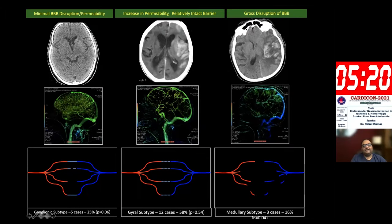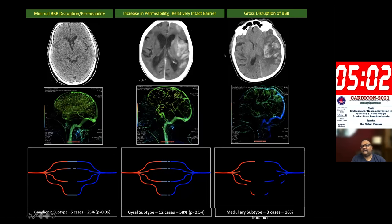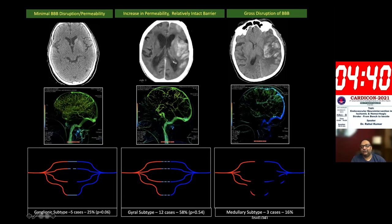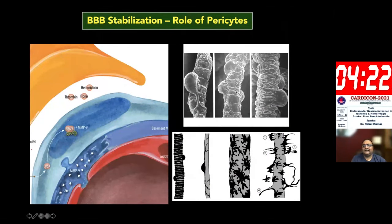We now have the capability to do a CT scan immediately after thrombectomy on the table itself. The problem is not just opening the vessel — reperfusion sets into motion a cascade of events that can end in hemorrhage. We find various patterns of contrast staining in the brain, which are not hemorrhages but indicate blood-brain barrier disruption patterns, helping us predict which patients are likely to develop hemorrhage later. Just doing angioplasty and stenting is not enough; we must monitor for subsequent bleeding.